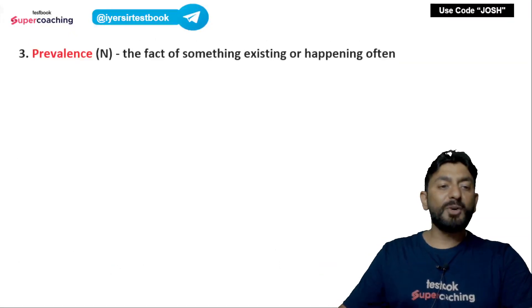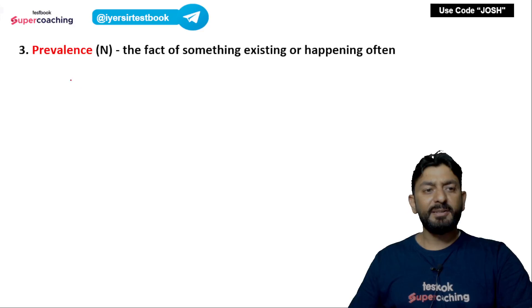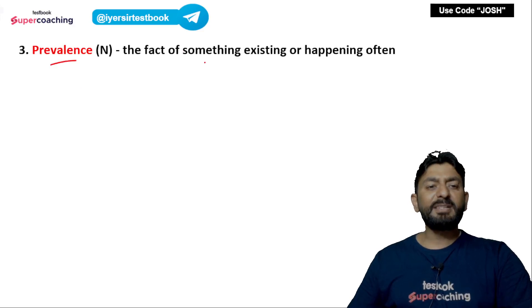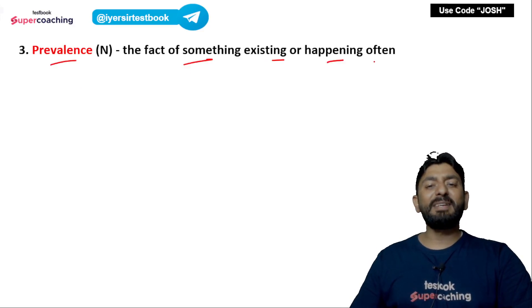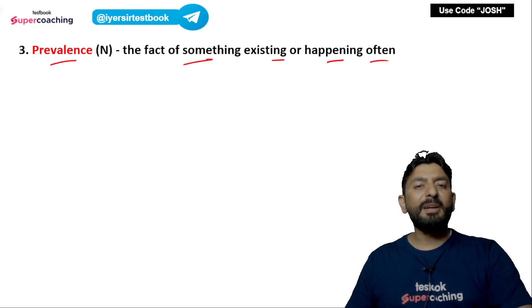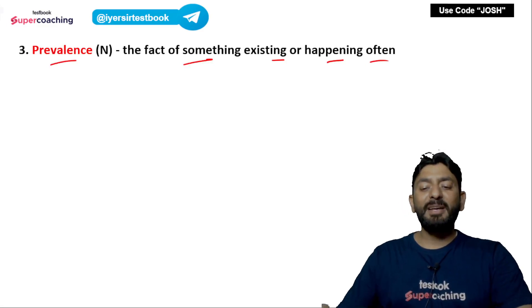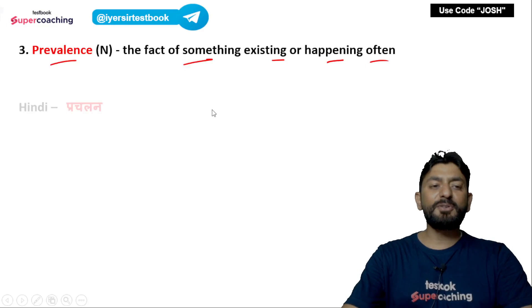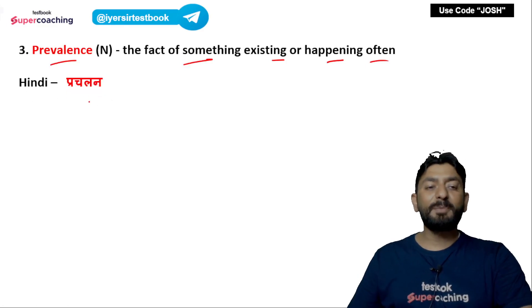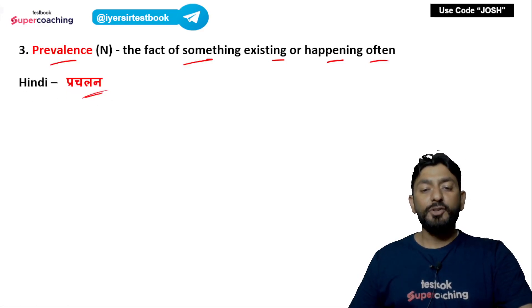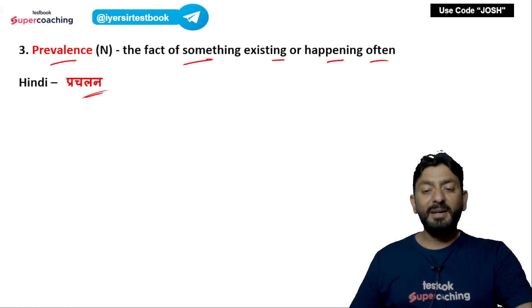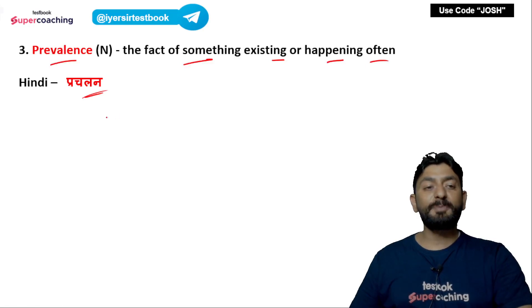The next word is 'prevalence'. Prevalence का मतलब है the fact of something existing or happening often. अगर कोई चीज़ prevalent है तो वो काफी प्रचलन में है. Hindi में इसका मतलब ही प्रचलन है — जो बहुत ज़्यादा अभी चल रहा हो, बहुत प्रचलन में हो — that is prevalence.